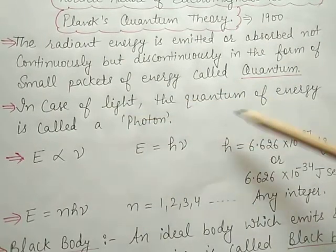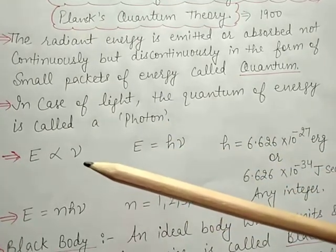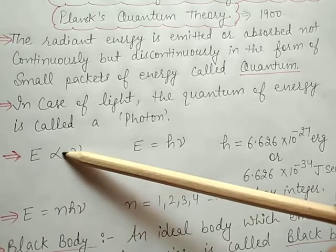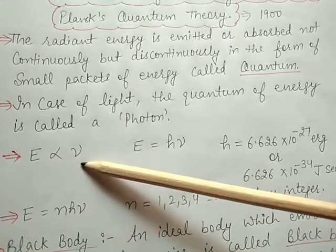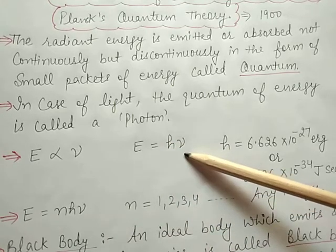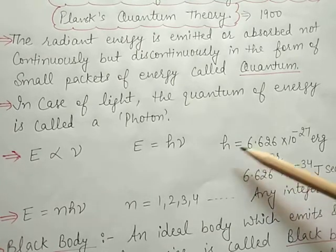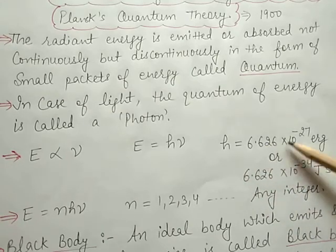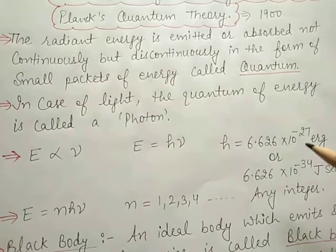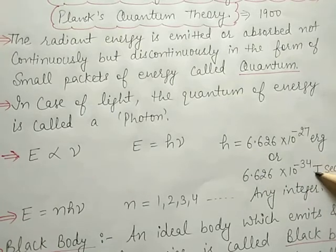In the case of light, this quantum of energy is called a photon. The second postulate states that the energy of each quantum is directly proportional to the frequency of radiation: E is directly proportional to mu, so E is equal to h times mu, where h is the proportionality constant also called Planck's constant. Its value is 6.626 multiplied by 10 to the power minus 34 joule seconds.